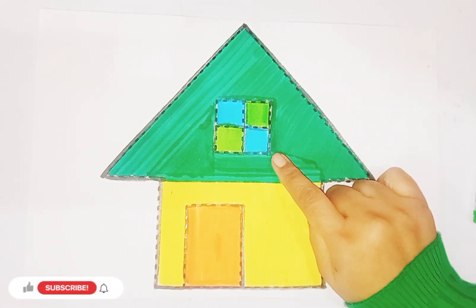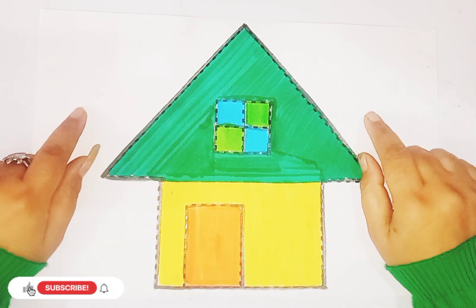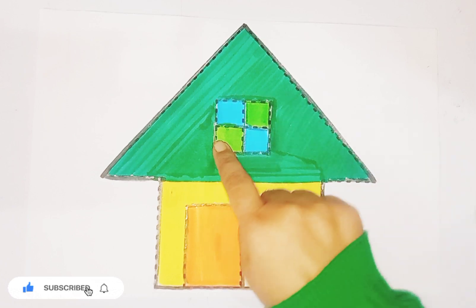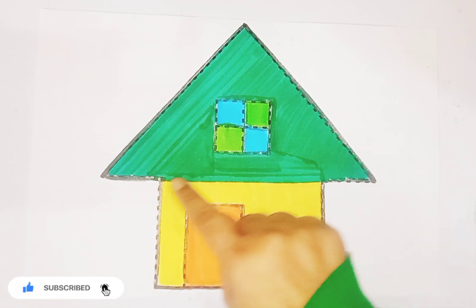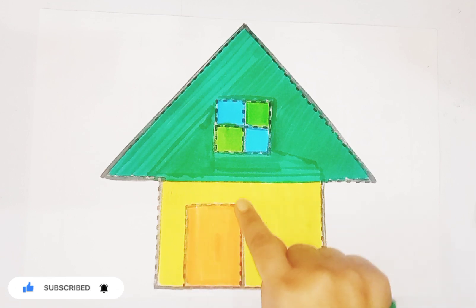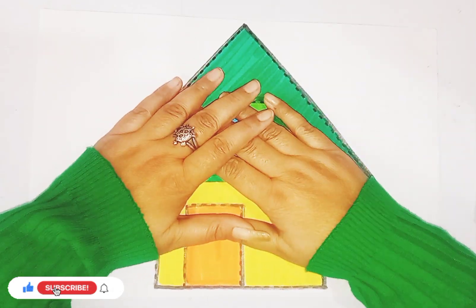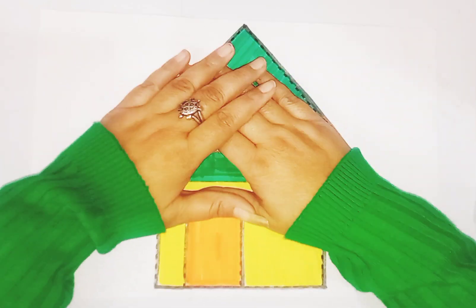So kids our shape house is ready. Let's revise again. This is a triangle with green color, square with sky blue and light green color, rectangle with yellow color. This one is also rectangle with orange color. So kids I hope you like the video. If you like the video please like and subscribe my channel. Bye bye.